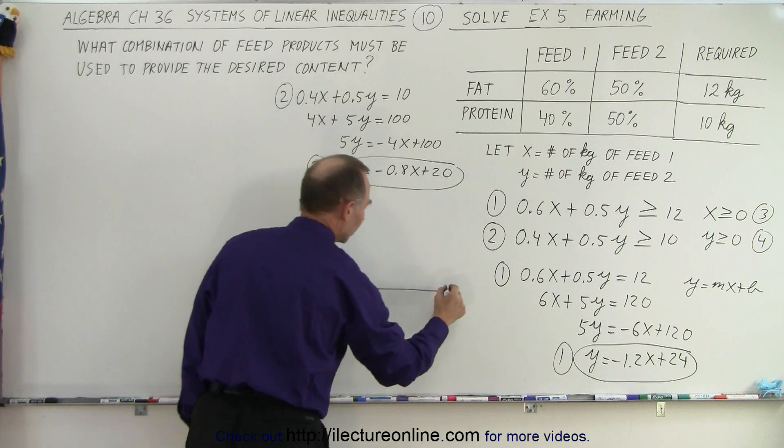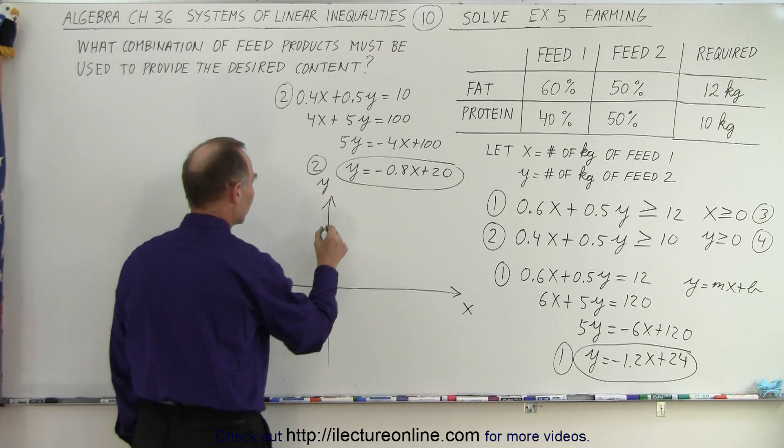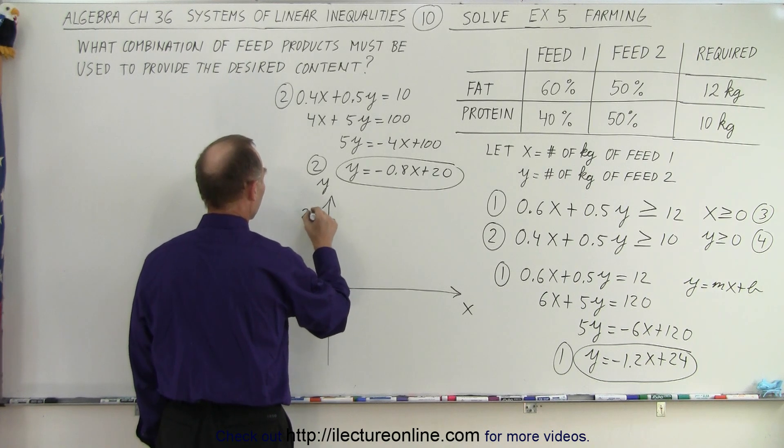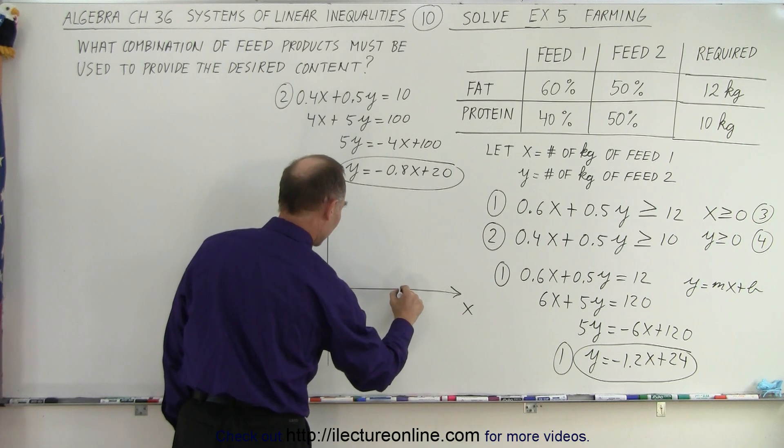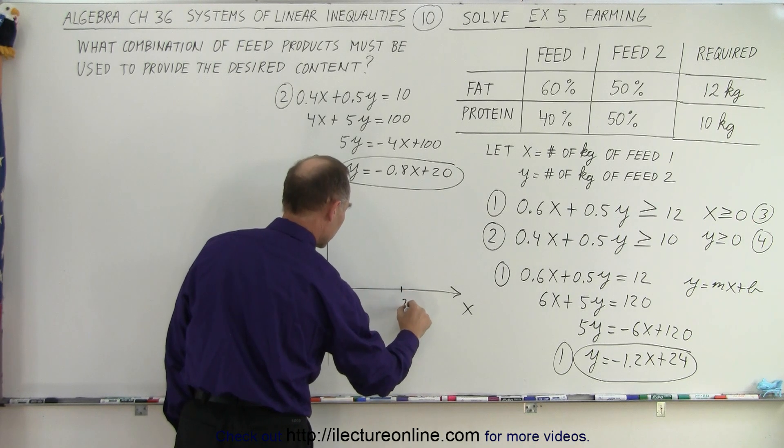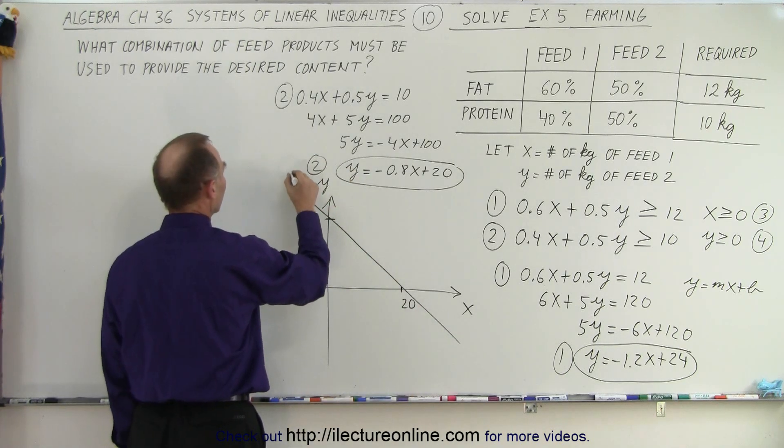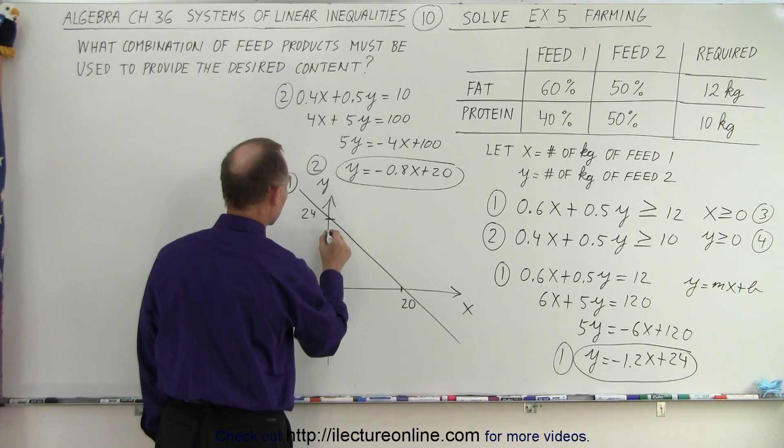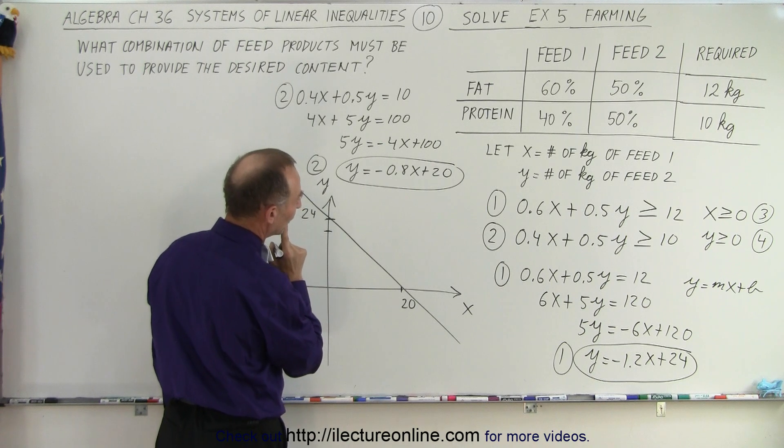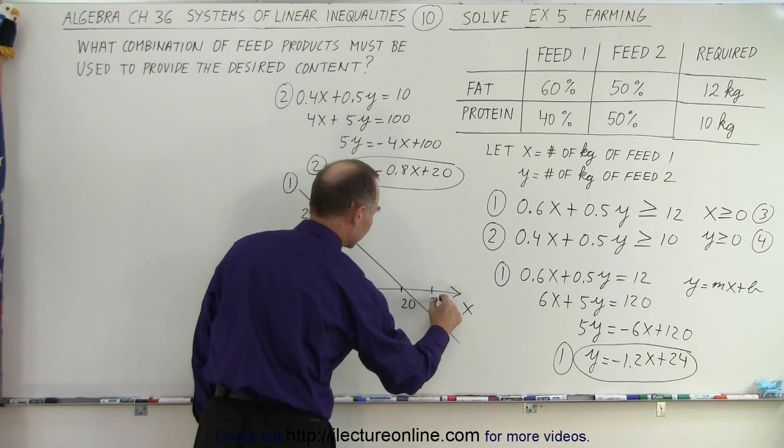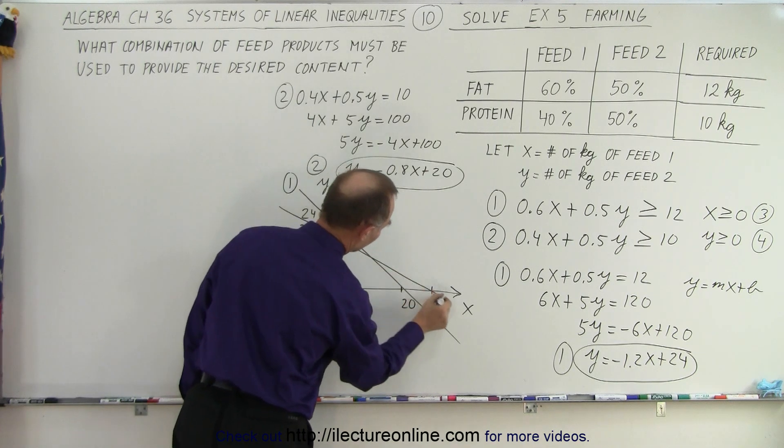Here's our y-axis. There's our x-axis. And the first equation we start at 24. And it slopes down at minus 1.2. That means we hit this at 20. And the line comes down like this. And that's line number one. Line number two starts at 20. The slope is negative 0.8. So that gets us to 25 over here. And that's 20 over here. So the next line looks like it's like this.